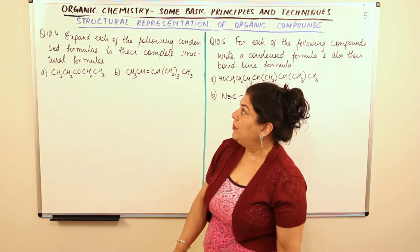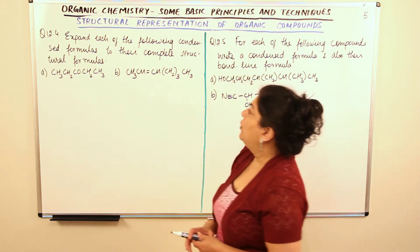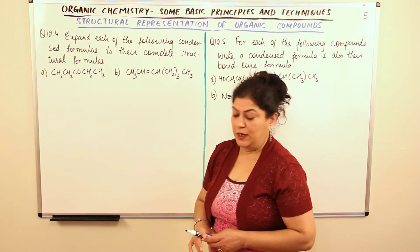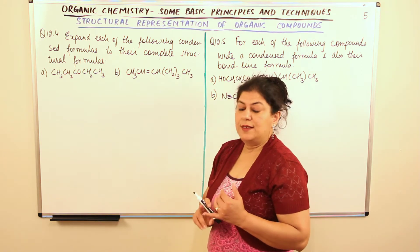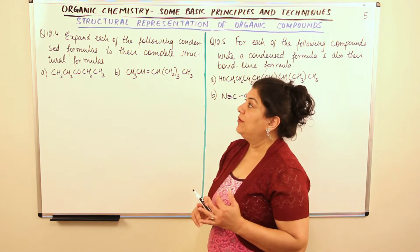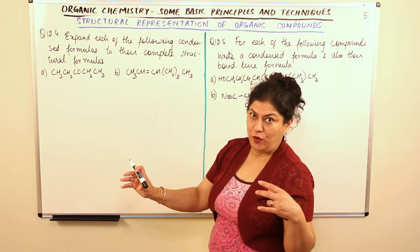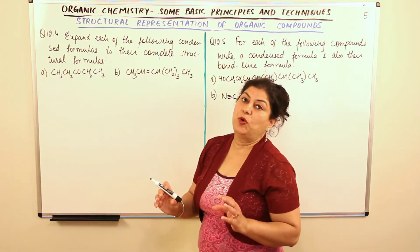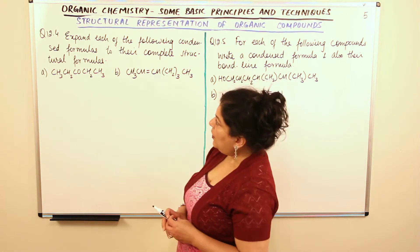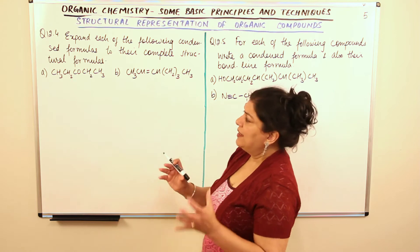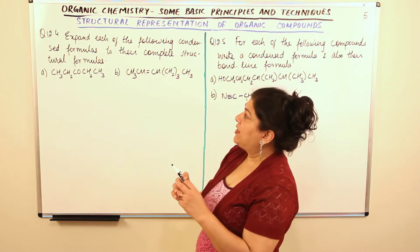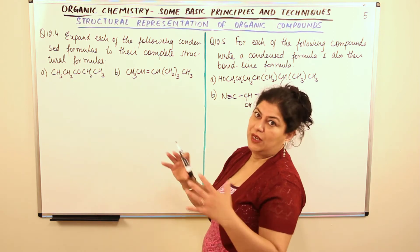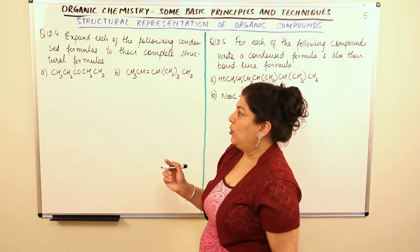This is question 12.4. You have to expand each of the following condensed formulae to their complete structural formulas. You remember we had the Lewis structures initially, then we had the expanded or complete formula, then we had the condensed structural formula and then the bond line notation. So we have the condensed formulae and they are expecting us to convert them into the expanded form, that is to give the details of every bond.